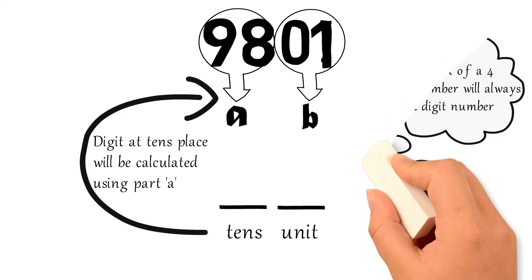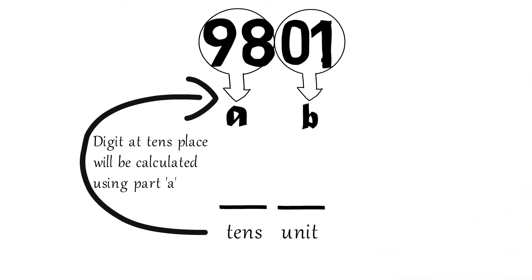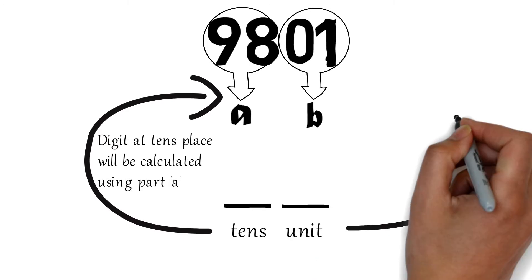Part a is made up of the first and the second digit, and part b is made up of the third and the last digit.